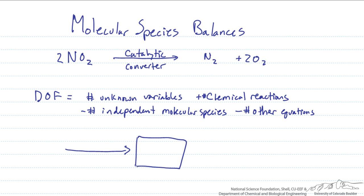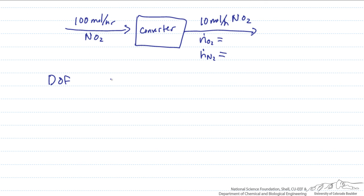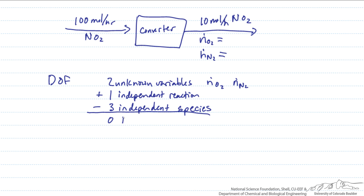So coming into our catalytic converter let's say we have 100 moles per hour of NO2 and coming out let's say we have 10 moles per hour of NO2. But we're also going to have a flow of oxygen coming out and we're also going to have a flow of N2 coming out. If we do a degree of freedom analysis on this system we have two unknown variables, the flow of O2 and the flow of N2, one independent reaction, and three independent species. We can see that we have zero degrees of freedom, so we know that this problem is solvable.